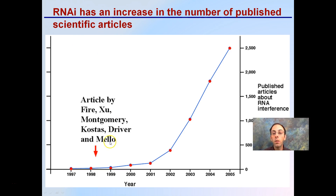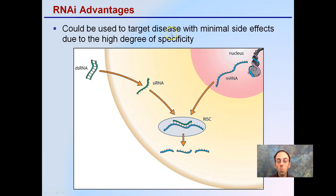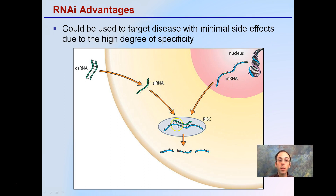RNAi has been increasing the number of published scientific articles. Back in 1997-1998, there were a minimal number of articles, and we see an exponential increase to 2005, with continued growth in published work. It's important because of its contributions in medicine. The advantage is that it could be used to target diseases with minimal side effects due to its high degree of specificity. By finding a very unique mRNA sequence, we could develop small single-stranded RNAs that would bind to that mRNA, causing it to be degraded and stopping the production of proteins for a given disease.